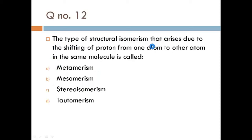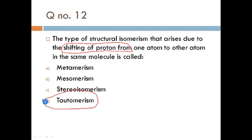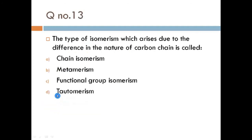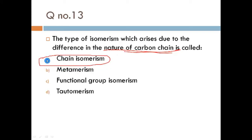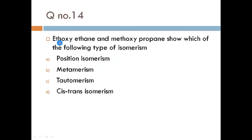Next question: the type of structural isomerism that arises due to the shifting of a proton from one atom to another in the same molecule is called tautomerism. So our answer is tautomerism. Next question: the type of isomerism which arises due to a difference in the nature of the carbon chain is called chain isomerism.